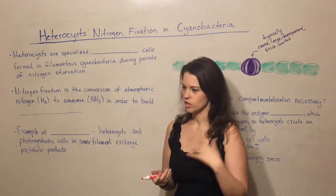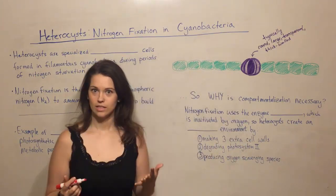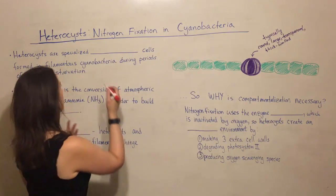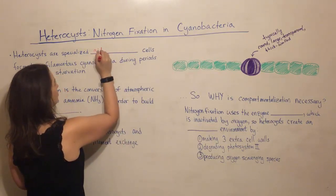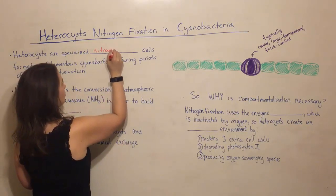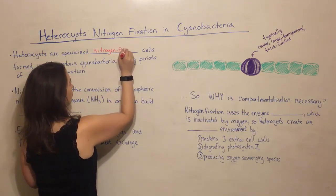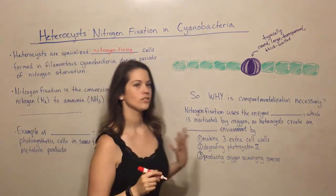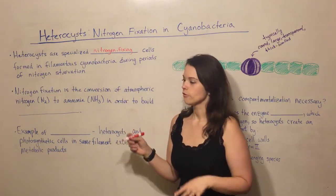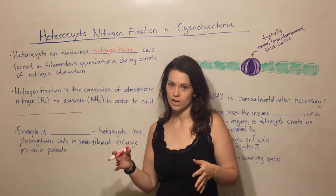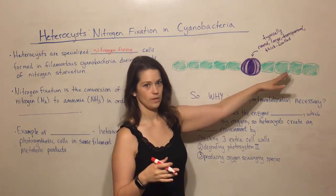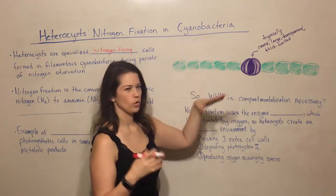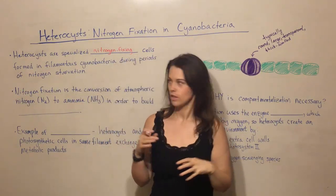Heterocysts are specialized cells — specialized in terms of being able to fix nitrogen. They are nitrogen-fixing cells formed in filamentous cyanobacteria. This right here is filamentous cyanobacteria — basically individual bacteria that grow loosely connected in a filament.